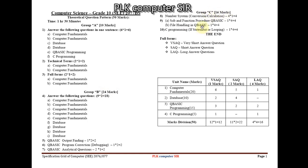Group C carries 16 marks. Question 8 is number system conversion and calculation: 4 sub-questions (a, b, c, d) × 1 mark = 4 marks. Two questions are number system conversions (e.g., binary to hexadecimal, decimal to binary) and two are binary arithmetic — addition, subtraction, multiplication, or division. This is from Computer Fundamentals.